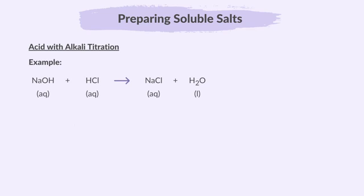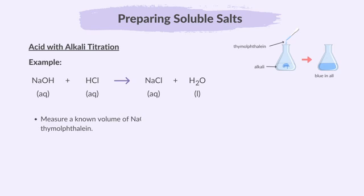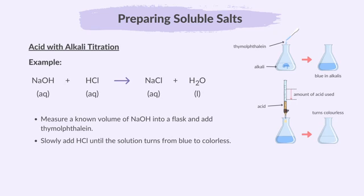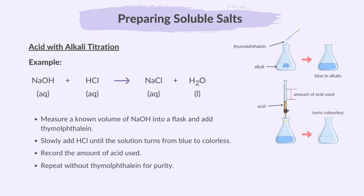Let's look at an example. For this reaction, measure a known volume of sodium hydroxide into a flask and add thymolphthalein. Slowly add hydrochloric acid until the solution suddenly turns from blue to colorless, indicating neutralization. Record the amount of acid used. Repeat without thymolphthalein for purity. Heat the solution to get sodium chloride crystals.